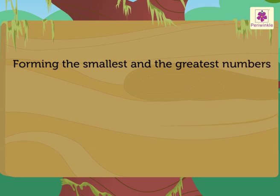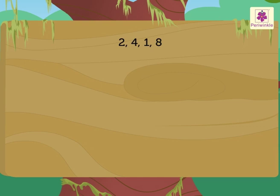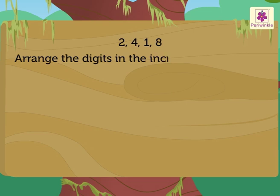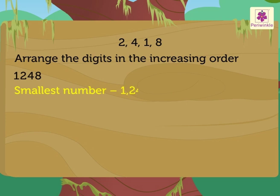Let us take the digits 2, 4, 1, 8. To form the smallest number using these digits, we arrange them in increasing order. So, we arrange the digits as 1, 2, 4, 8. Thus, we get the smallest number as 1,248.